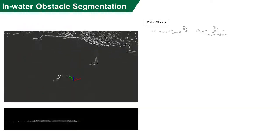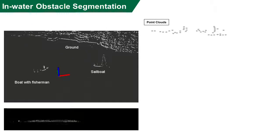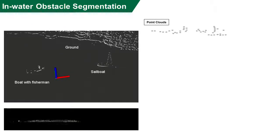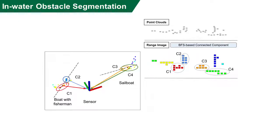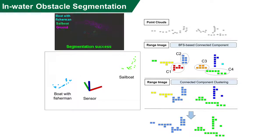In our method tailored for ASVs, first, we convert the 3D point cloud into 2D range images for efficient traversal by a BFS algorithm. Next, we use a variant of hierarchical clustering to merge connected components for final output as point-wise segmentation.